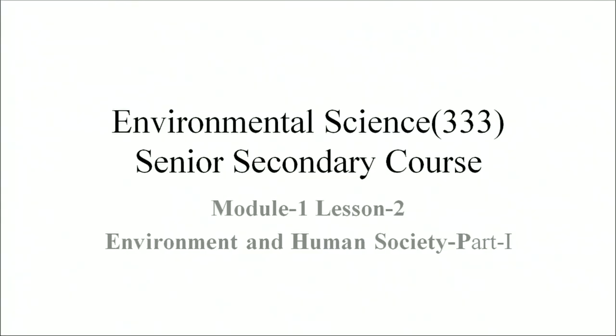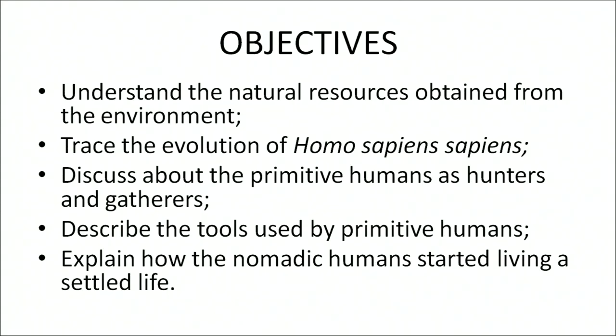Dear learners, since environment is important in shaping human societies, let me discuss in detail about environment and society, which is lesson number 2 of the environmental science course. The objectives of this lesson are to understand the natural resources obtained from the environment, trace the evolution of Homo sapiens sapiens, discuss primitive humans as hunters and gatherers, describe the tools used by primitive humans, and explain how nomadic humans started living a settled life.